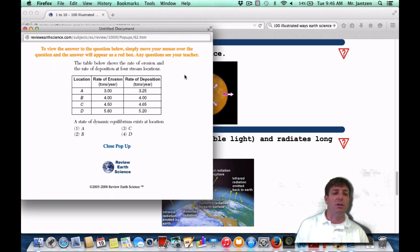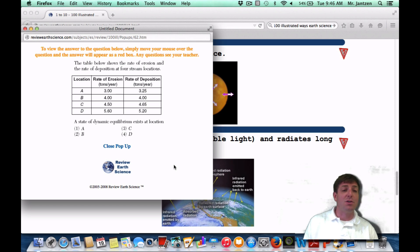Or you could have the amount of energy being absorbed is equal to the amount of energy being radiated. That's also dynamic equilibrium. If you're going to see it as a Regents question, the table below shows the rate of erosion and the rate of deposition at four stream locations. A state of dynamic equilibrium exists at what location? Well, you want equal equilibrium. So choice B is going to be the one that has the amount of erosion equal to the amount of deposition.